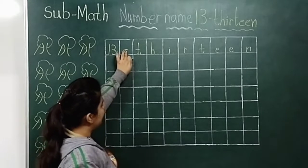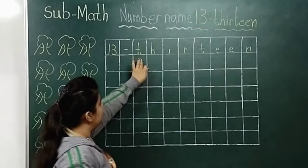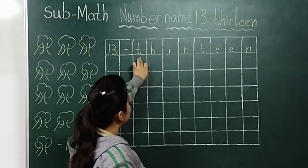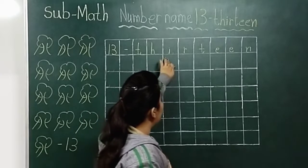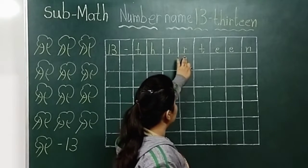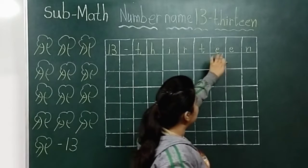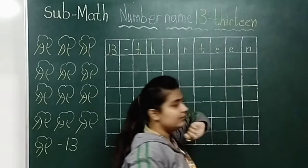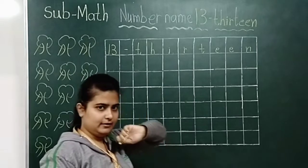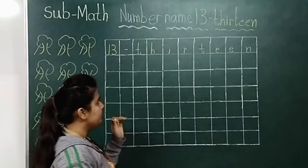Then a small dash, and then C, H, I, R, T, double E, N — thirteen.